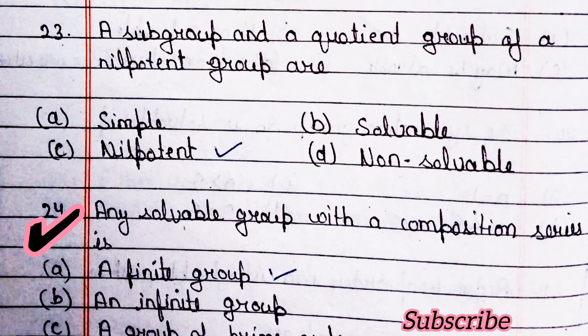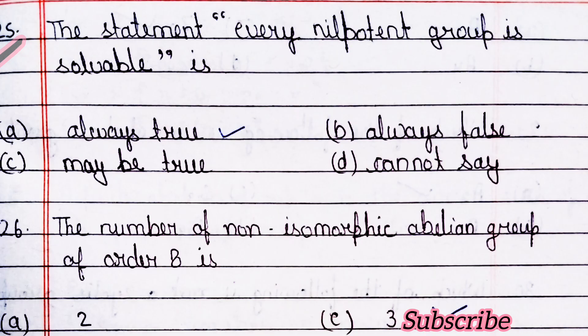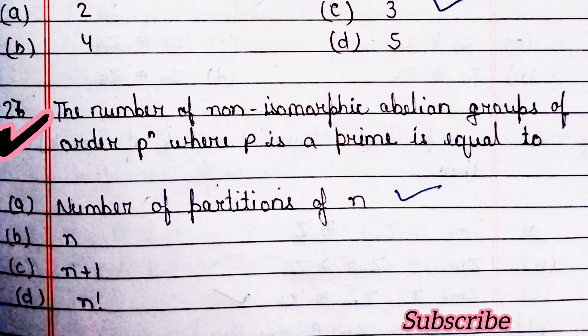Next question: a subgroup and a quotient group of a nilpotent group are nilpotent — option C is right. Next question: any soluble group with a composition series is a finite group — option A is right. Next question: the statement 'every nilpotent group is soluble' is always true — option A is right.